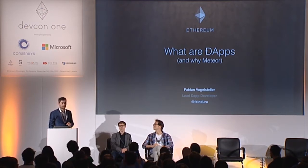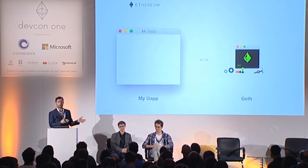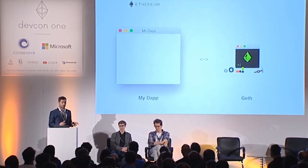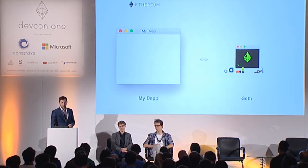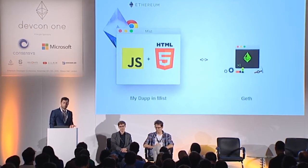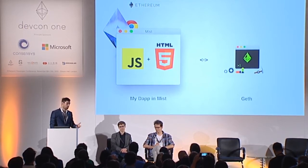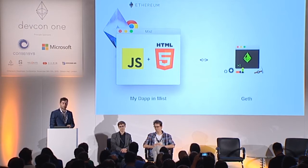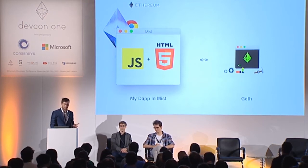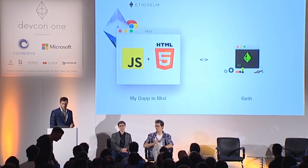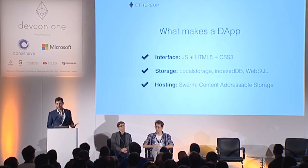A dApp in its simplest case is basically an application talking only to a blockchain, so the main source of information — the main backend — is a blockchain, because it's a trusted source of information. This can be a native app, but it will most likely be a JavaScript HTML5-based web application, because we have Mist where you can run it, which automatically gives you access to the blockchain.